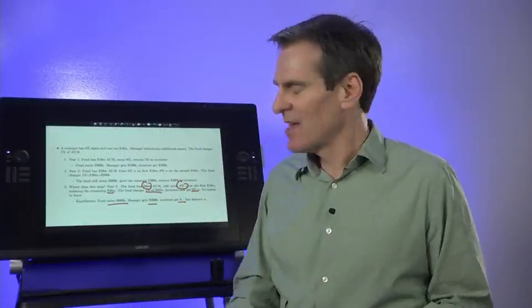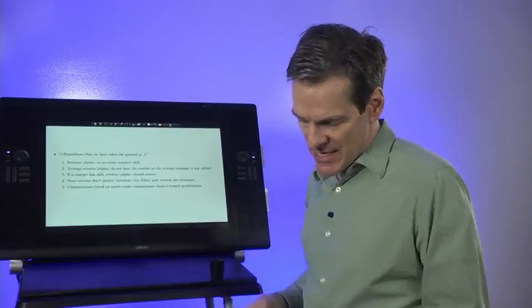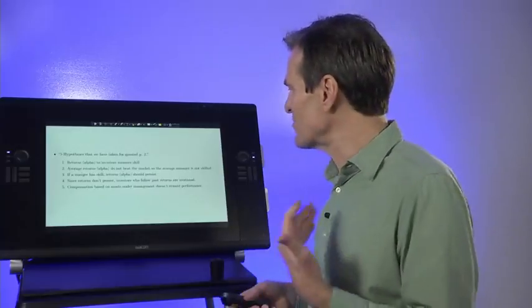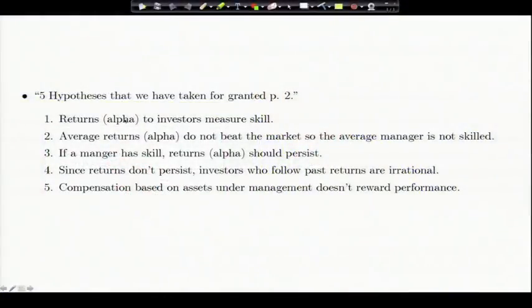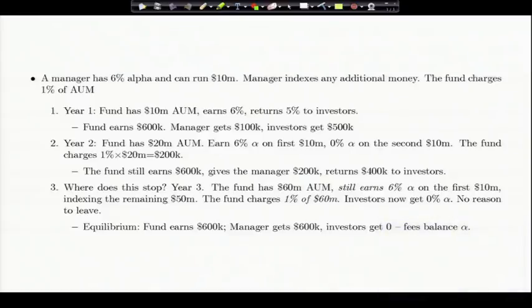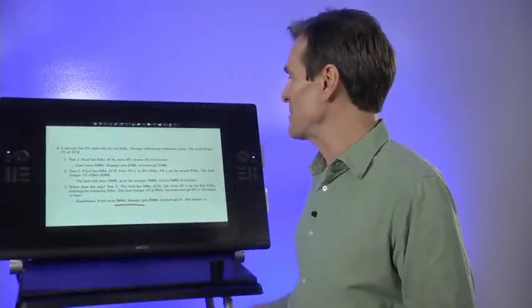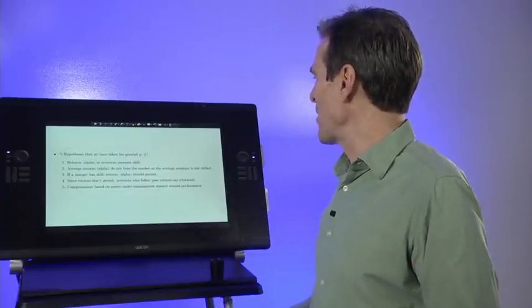Now let's think about what this story generates—all the things we thought were puzzling. Burke lists the five hypotheses we took for granted when discussing Carhart and Fama and French. We were looking at returns alpha to investors as a measure of skill. But in this example, the returns to investors are zero in the end. The measure of skill is the amount the fund manager earns—not just alpha, but alpha times assets under management. This fund is only earning 1% alpha of its total assets, but the skill is the ability to earn 6% alpha on the first $10 million. So that was wrong. Alpha times assets under management measures skill.